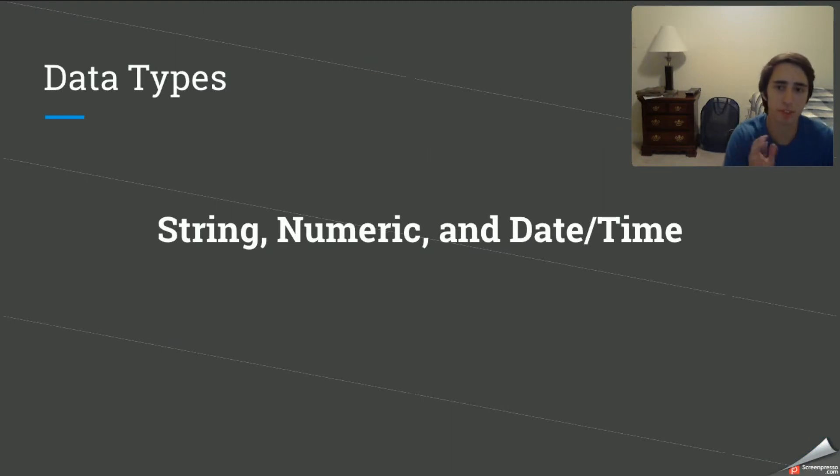So first off, it's important to understand the different types of data types. We have string data types, numeric data types, and date and time data types. Now you might already kind of get a feel about what these data types might look like, but we're just going to jump ahead and look at each individual one and see the different types of data types we can get inside of those.